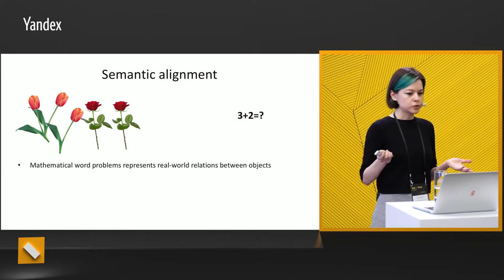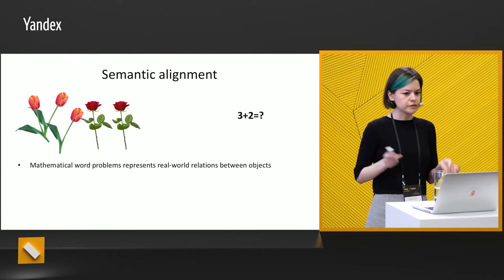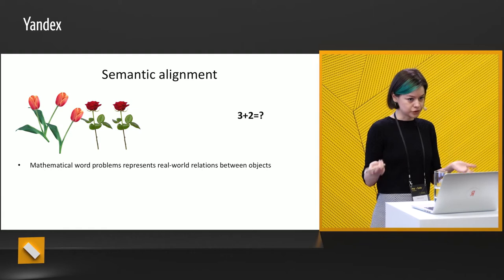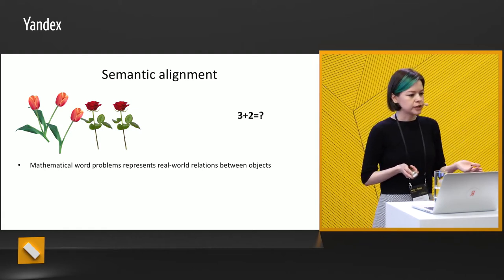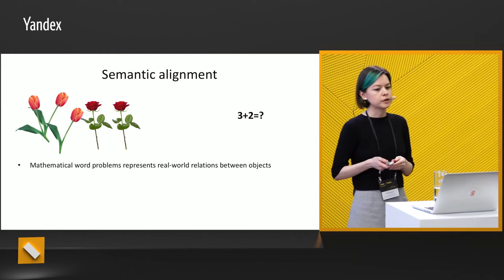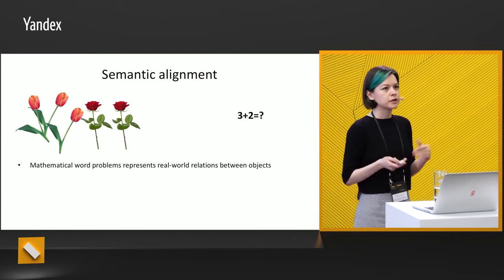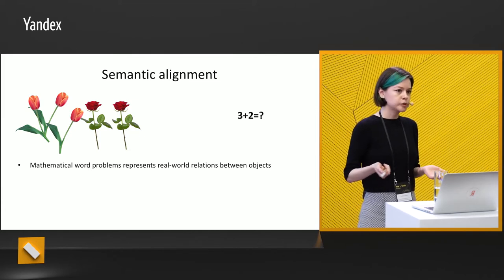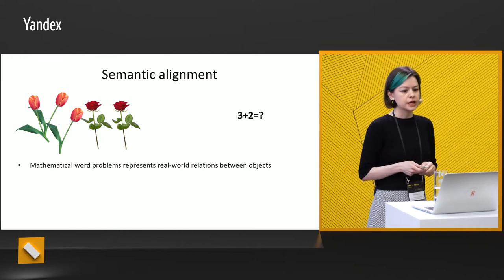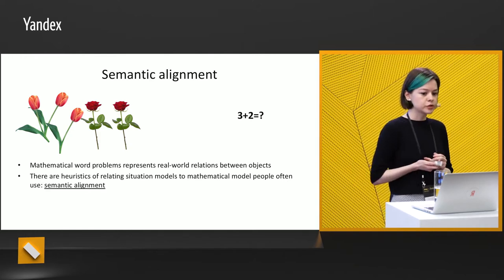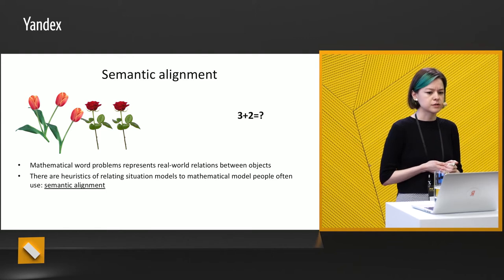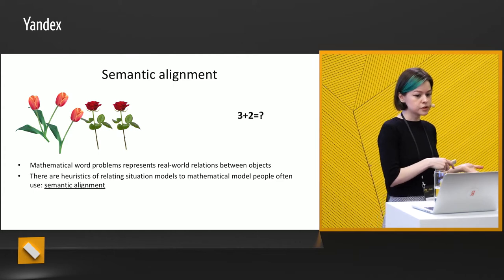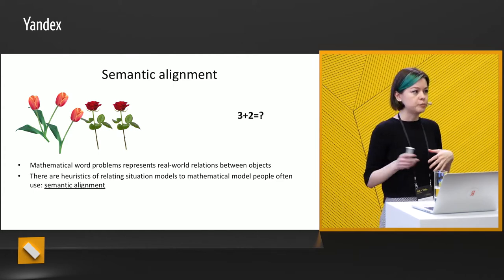For example, if we have a situation with three roses and two roses and three tulips, it's easy for us to add these objects. And if we have another word problem where we have to deal with vases and tulips, it's easy to solve problems on division. In previous research, authors named some heuristics that help us relate situation models to mathematical models, and people often use them.